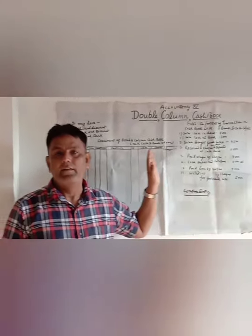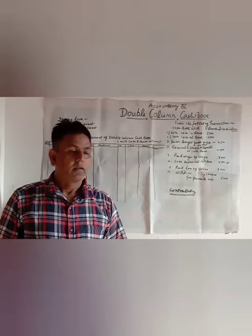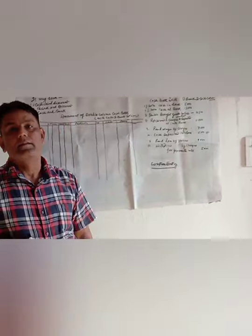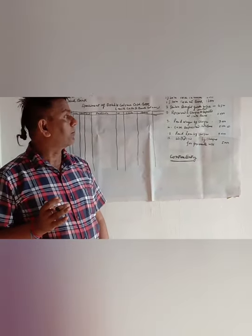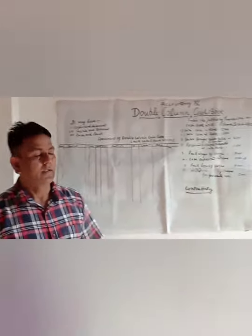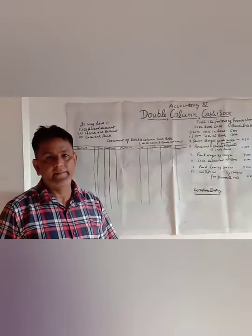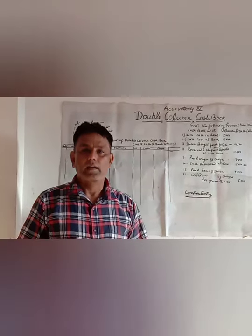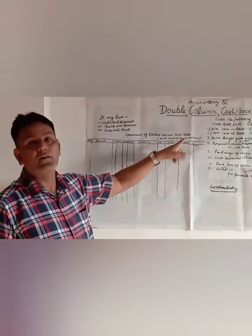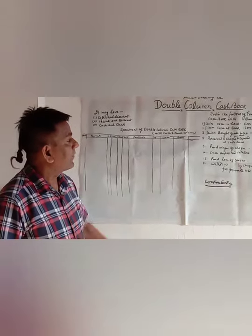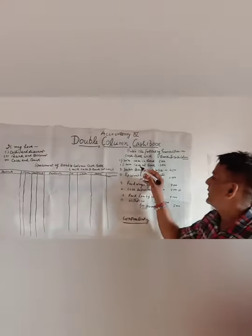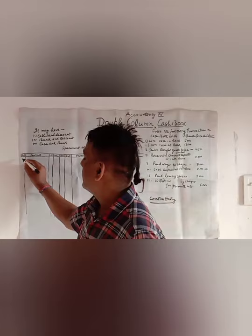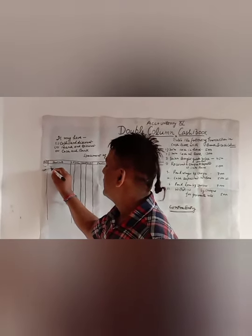Now we will put it into practice and learn how to prepare the double column cash book. There is a question on the left side that you can see, and we will enter these transactions into the cash book — the double column cash and bank column cash book. On 1st January 2020, the balance cash in hand is 5,000 and cash at bank is 30,000. We write '1st January 2020, to balance'.